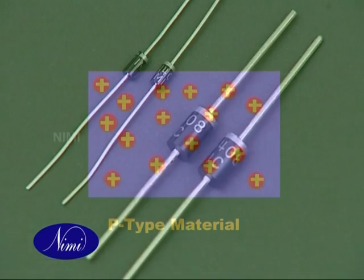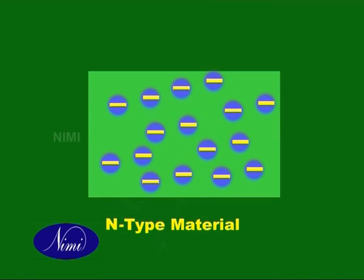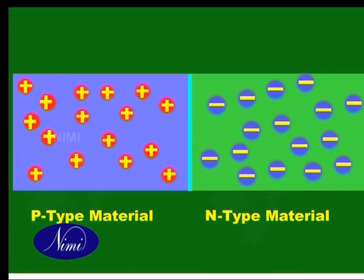A diode is made by combining P and N materials. The surface at which these materials meet is the P-N junction.